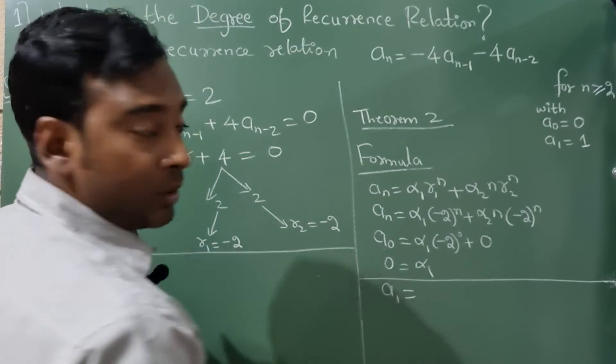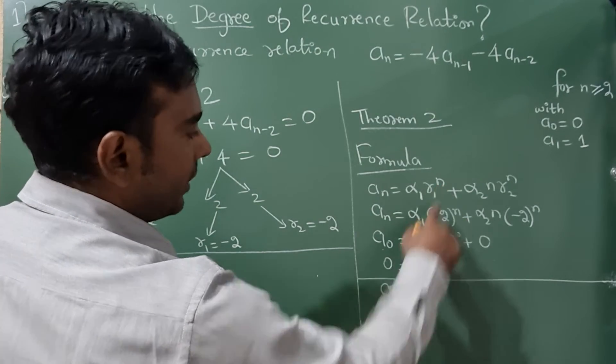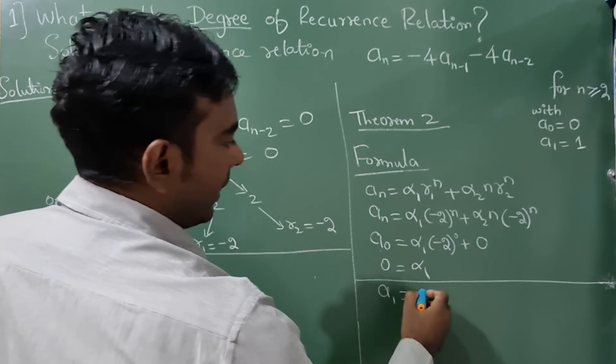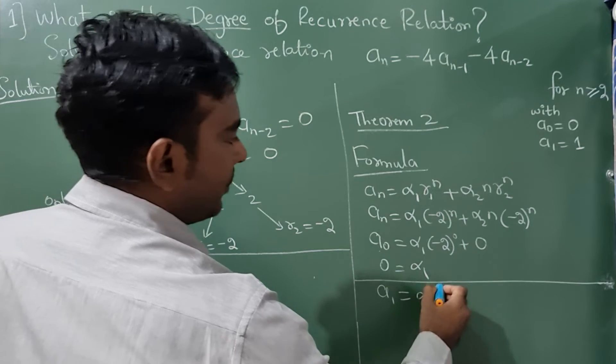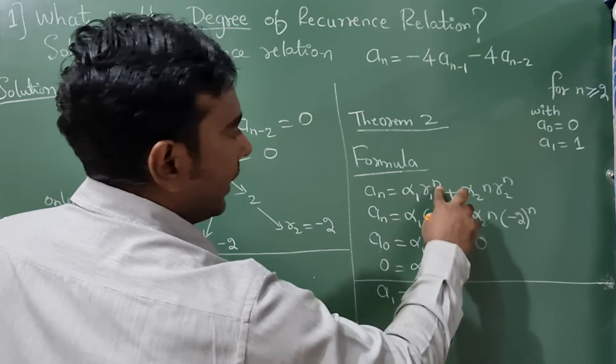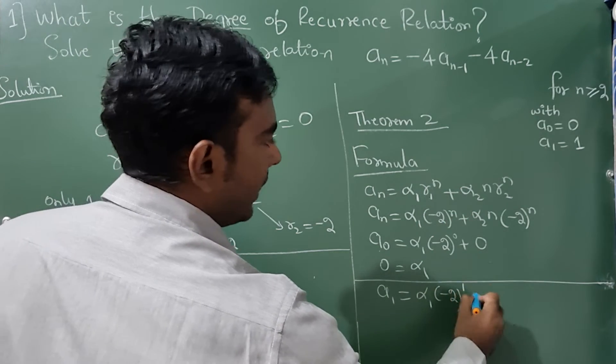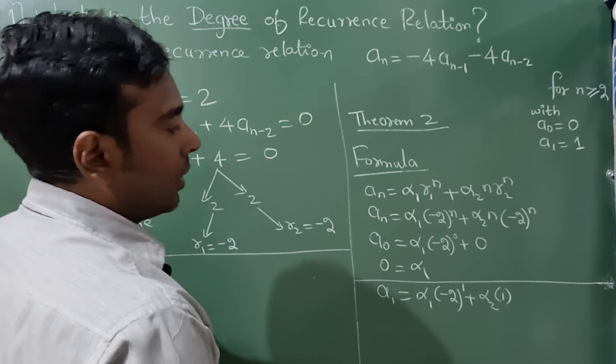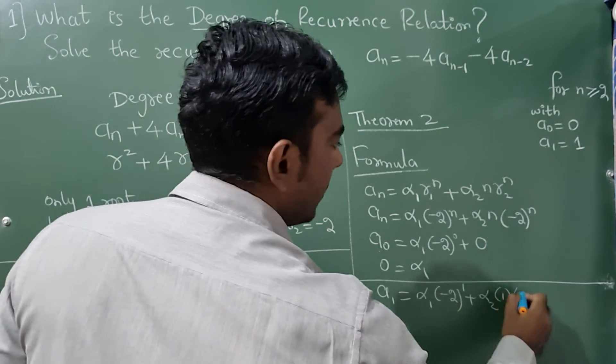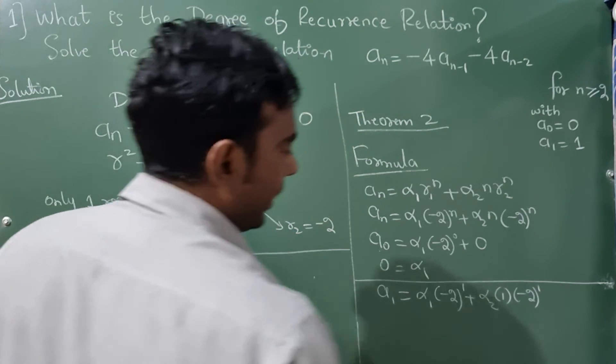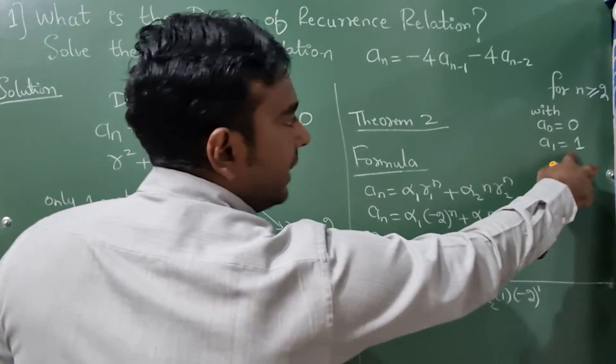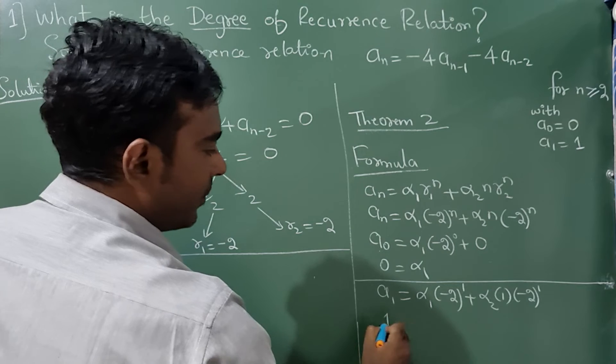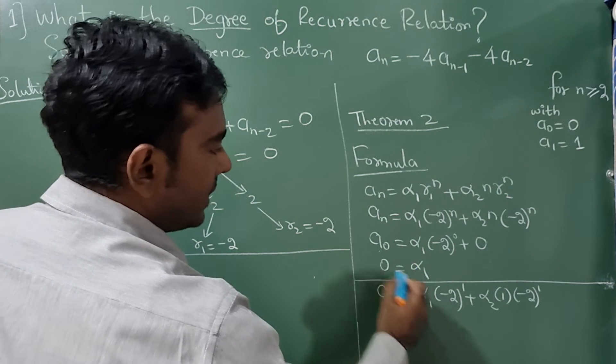times (-2)¹. In place of n I am going to write 1, α₂, in place of n substitute 1 and (-2)¹. What is a₁ here? Initial condition, it is 1.